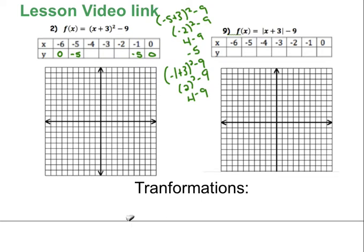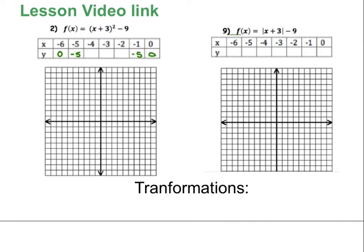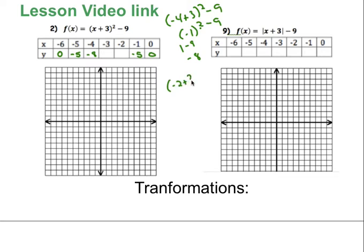I'm not expecting you to do all of this — I just want you to see where the numbers come from because it's kind of cool. If I put in negative 4: negative 4 plus 3 squared minus 9 → negative 1 squared minus 9 → 1 minus 9, which is negative 8. Similarly, if I put in negative 2: 1 squared minus 9 also gives negative 8.